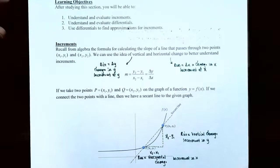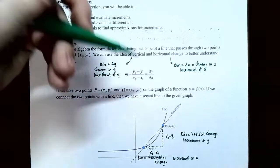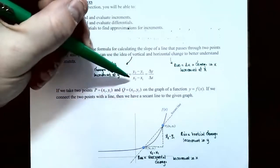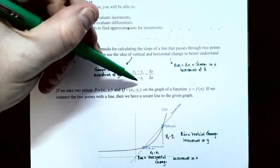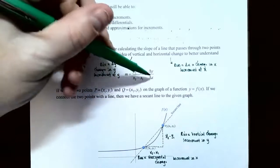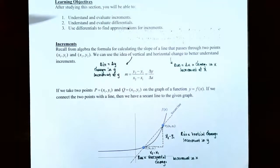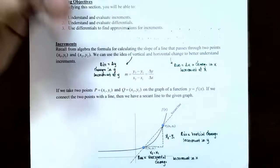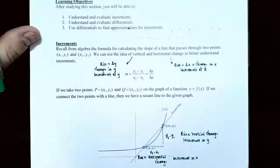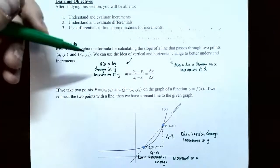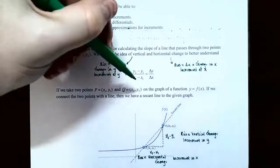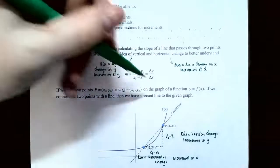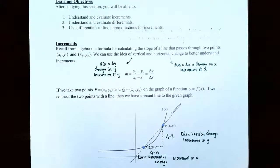Delta y tells you how much the y values differ from one another. On the other hand, the denominator for the slope formula is x2 subtract x1, or delta x — the change in the x coordinates. You may also think of the denominator as the run. Delta x is called the increment of x.